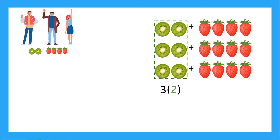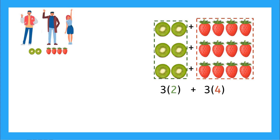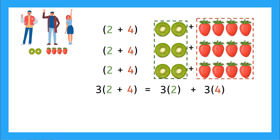And for the strawberries, if I have 4 strawberries and I'm adding them to themselves 3 times, then I have 3 times 4 strawberries. So this is the same as 2 plus 4 being added to itself 3 times, which would look like 3 times 2 plus 4. So this is how the distributive property works — both the kiwis and the strawberries get multiplied by 3. Another way of saying it: the 3 gets distributed to the kiwis and the strawberries.